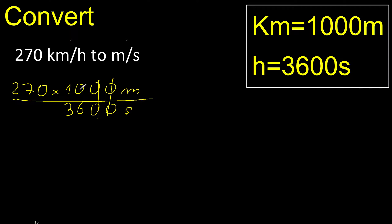Can be simplified because it can be divided by the same number. Divided by 2: 10 divided by 2 is 5. 36 divided by 2 is 18.